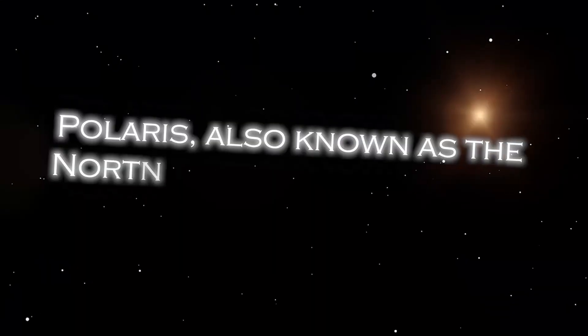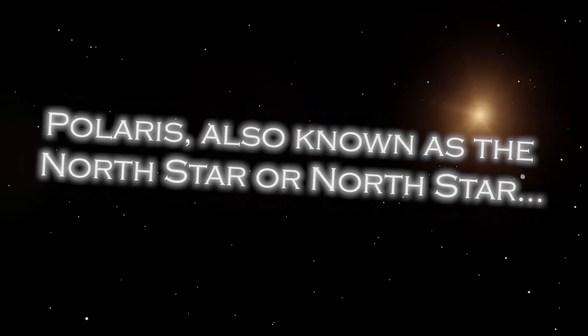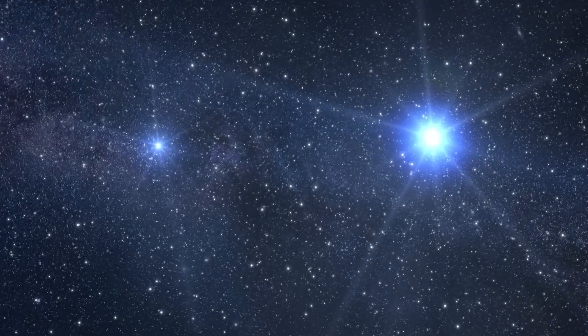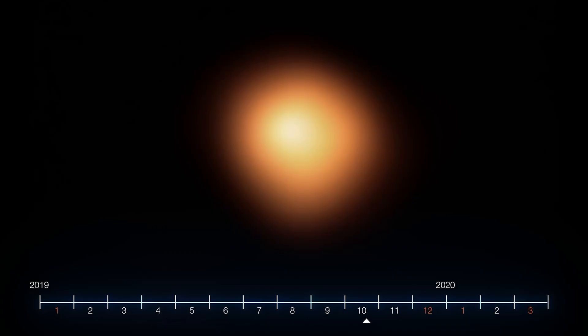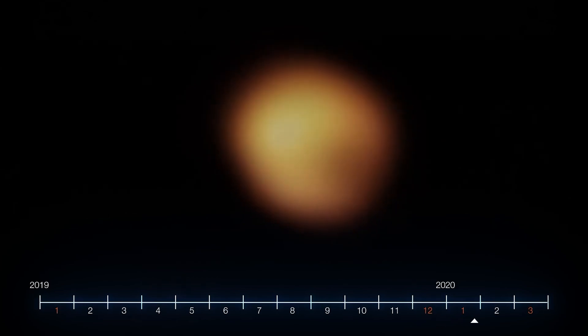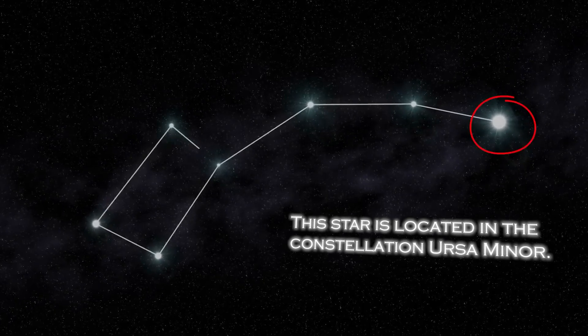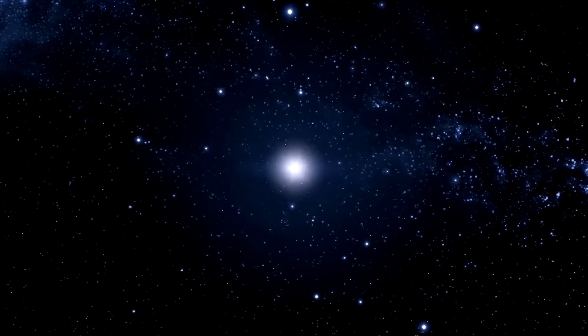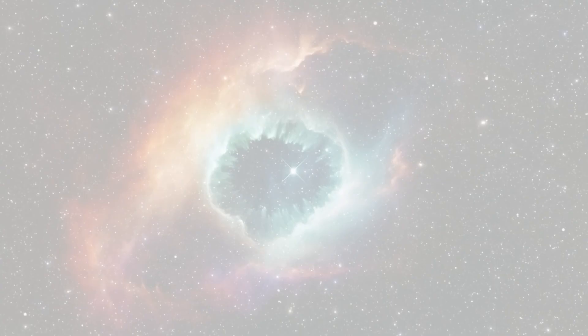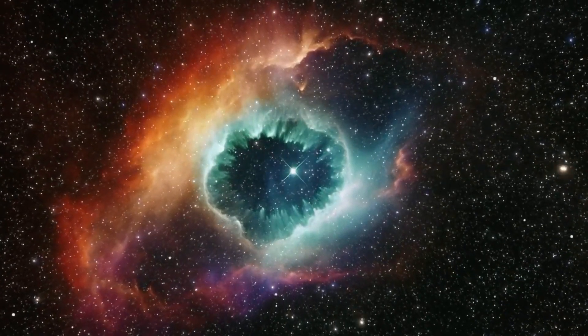Polaris, also known as the North Star, occupies a special position in the sky because of its proximity to the celestial North Pole. It is almost directly over the Earth's North Pole, which gives the illusion that it remains static in the northern sky. The star is located in the constellation Ursa Minor. Polaris is a star of moderate brightness that stands out as a yellow-white supergiant of considerable dimension compared to our Sun.